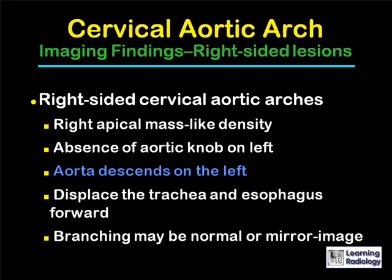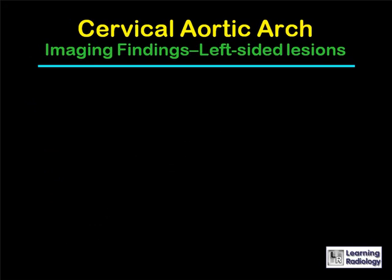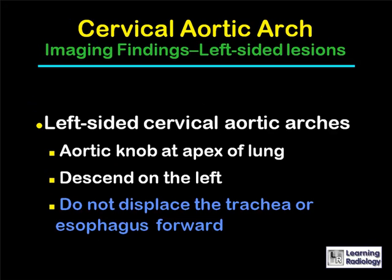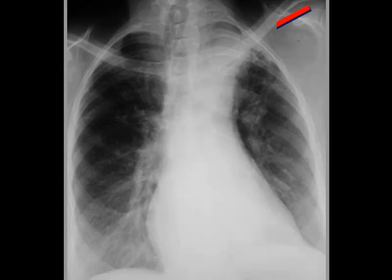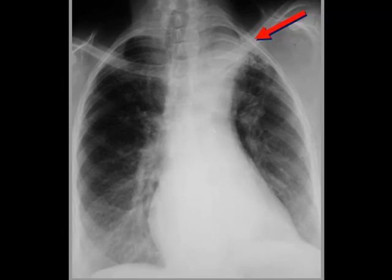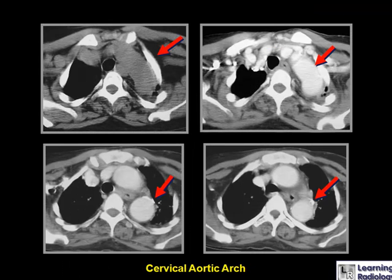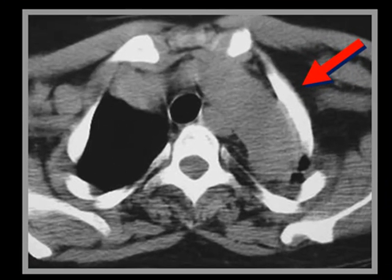Branching can be normal or mirror image. In left-sided cervical aortic arches, the aortic knob is at the apex of the left lung; these also descend on the left but do not displace the trachea or esophagus forward. This is an example of a cervical aortic arch in an adult — you can see the soft tissue density representing the aortic arch high in the apex of the lung. This happens to be a left cervical arch, though most are right-sided. The CT scan of the same patient shows the cervical aortic arch high in the apex of the left lung.